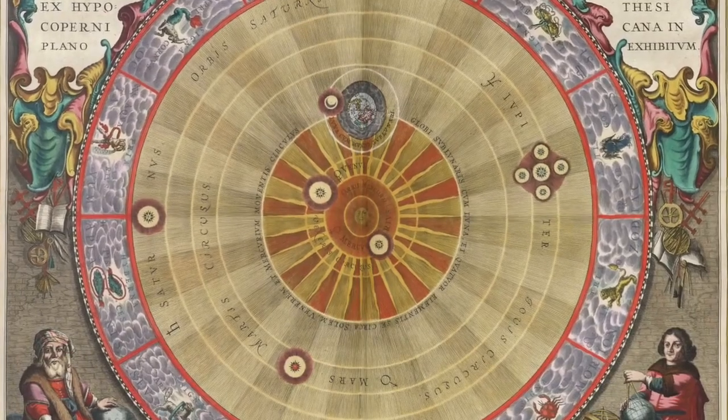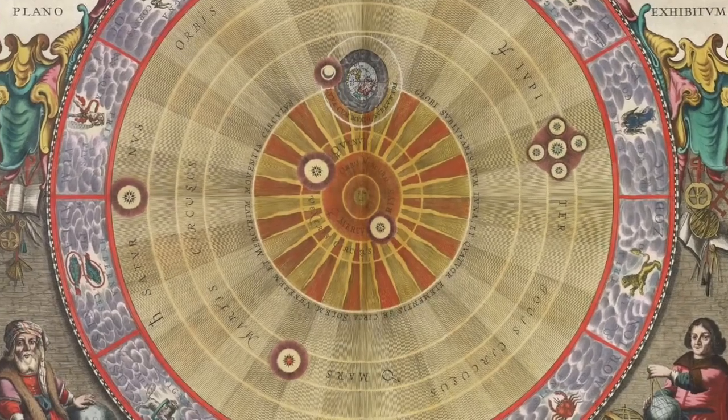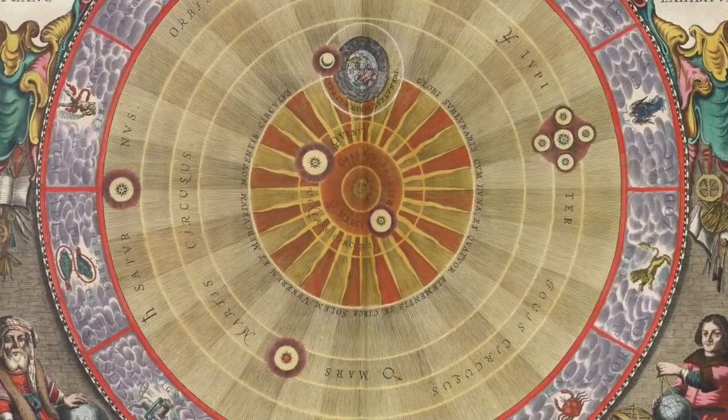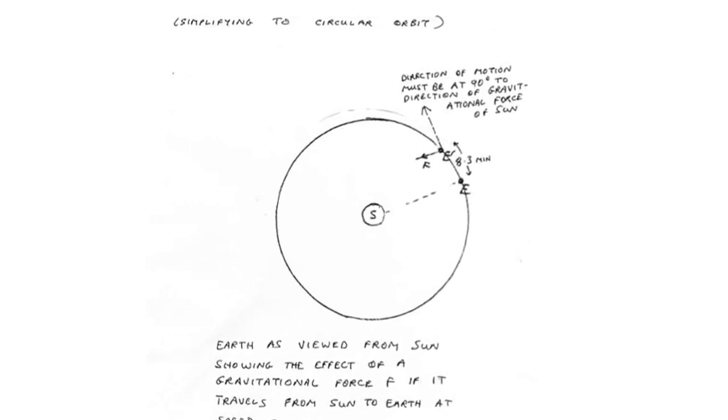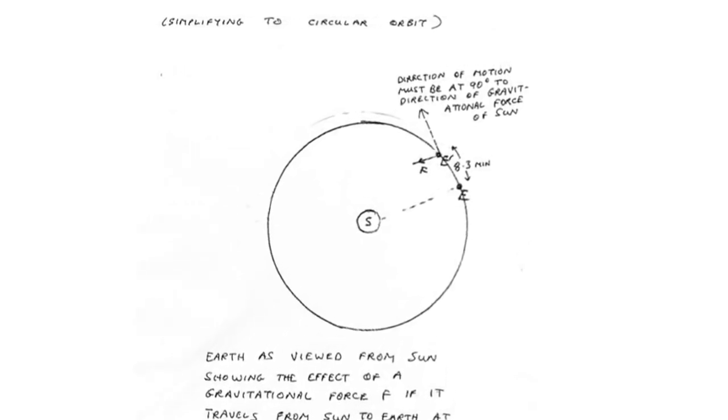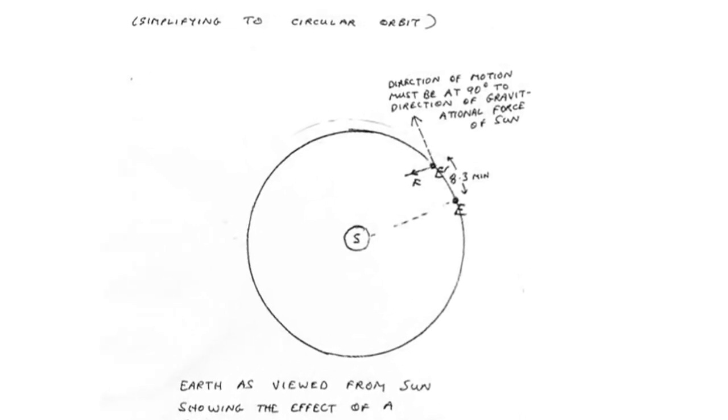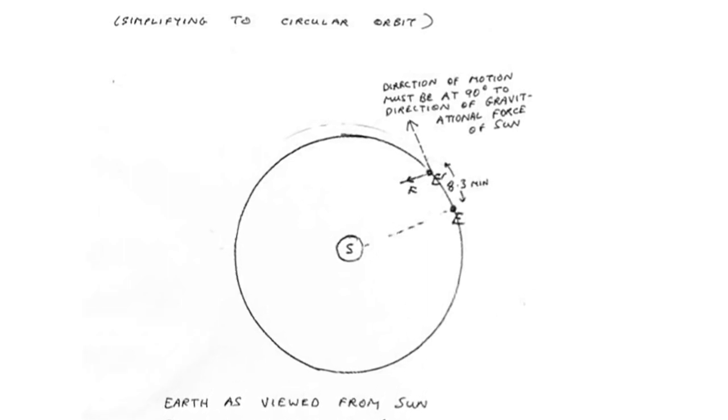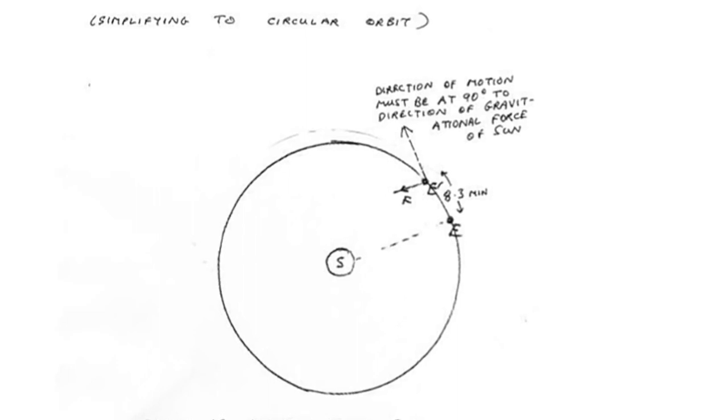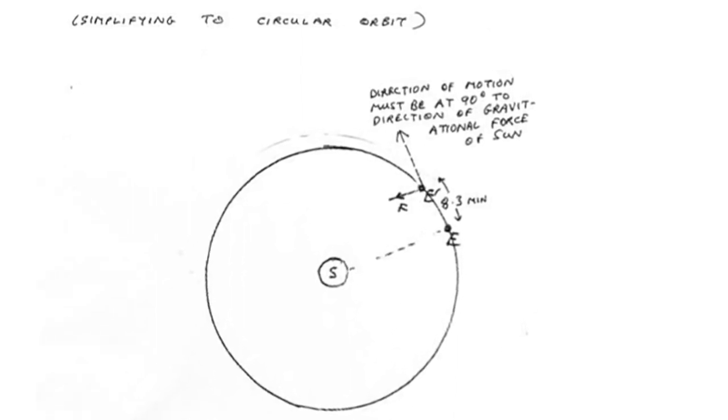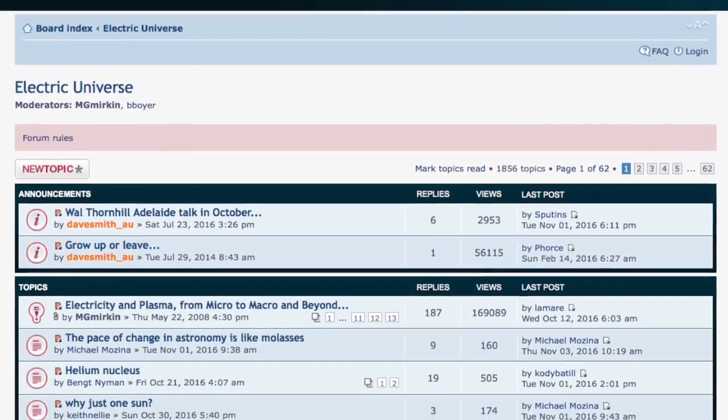In a Newtonian heliocentric system, we understand the forces of attraction that the primary and its satellite exert upon one another to be equal and opposite. A reaction that was caused by an action 8.3 minutes beforehand, in the case of the Earth and the Sun, would no longer be the opposite that the law describes. The effect of this can be seen from my diagram of the Sun as the reference point or frame of reference for an orbiting Earth.